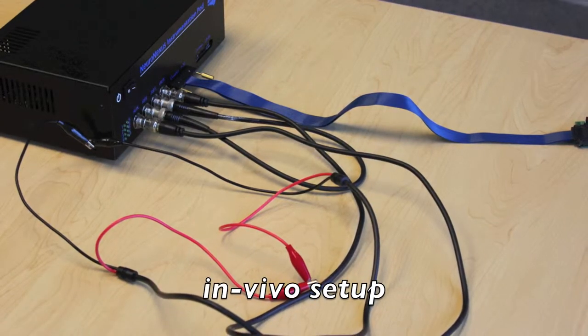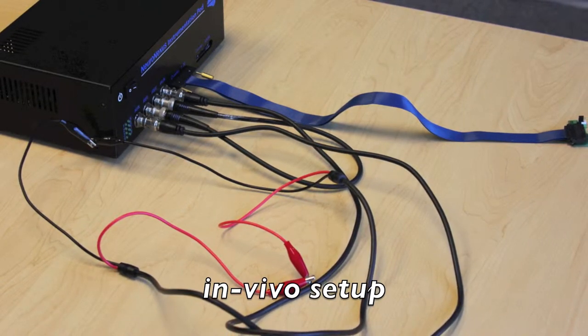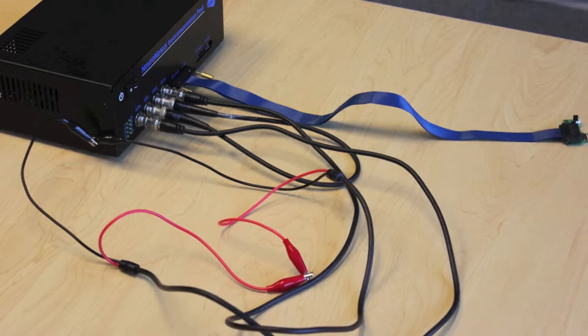Now we'll show you how to set up for an in vivo measurement. Because of the absence of a reference electrode, you'll have to make a few changes to the connections.